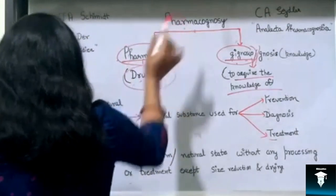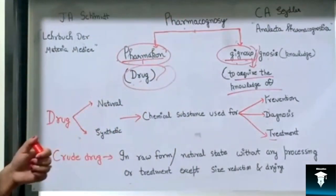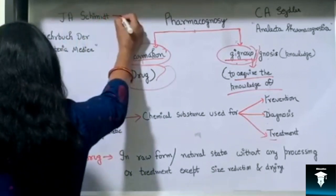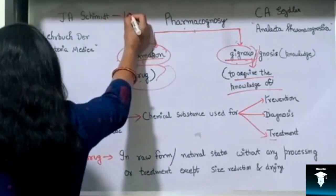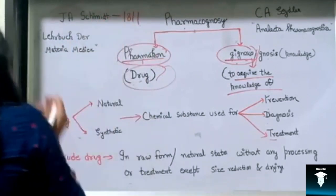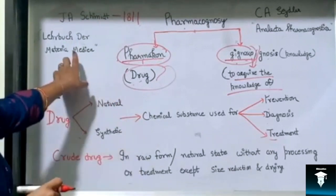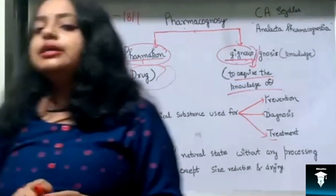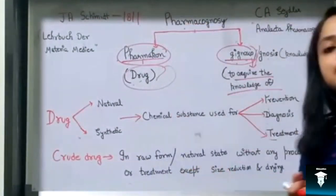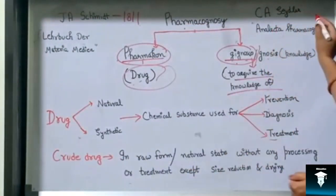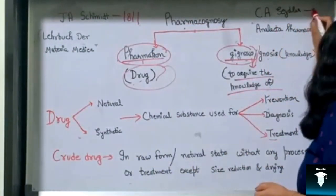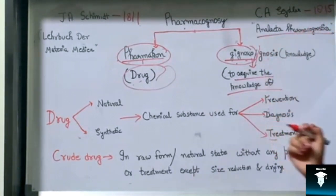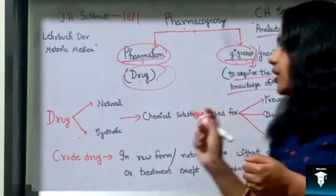This term Pharmacognosy was first coined by an Austrian physician J.E. Smith in the year 1811, in the title of his book Labus del Matra Medicum. Secondly, this term was used by a German scientist C.S.N. Glerd in the year 1815, in the title of his book Analecta Pharmacognostica.